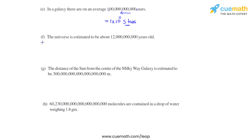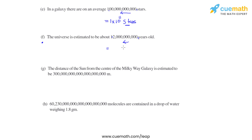Coming to part F, it says the universe is estimated to be about this large number of years old. We try to get the decimal between 1 and 2 so that we get the number 1.2. The number of places by which we have to move the decimal towards left is 10. So the answer will be 1.2 × 10¹⁰ years old. This is the standard form of the age of the universe.